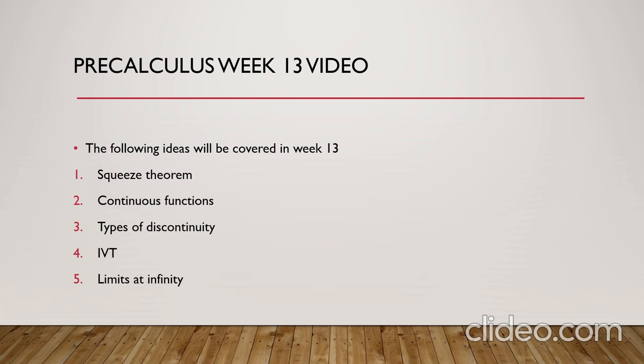Then we will talk about the types of discontinuity. We have different types such as the vertical asymptote discontinuity, which is called the infinity discontinuity. Then we will talk about the jump discontinuity, which occurs when the limit does not exist.